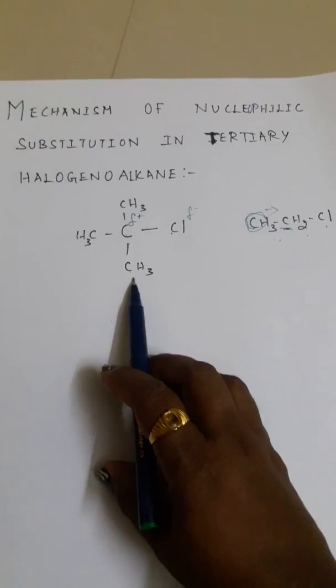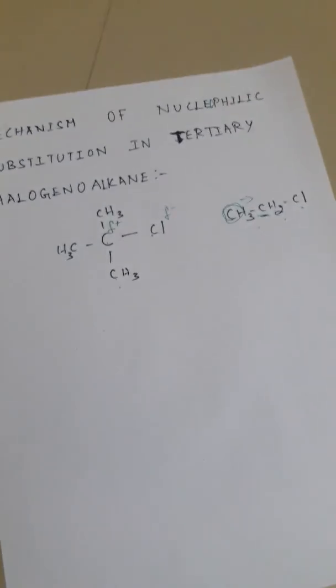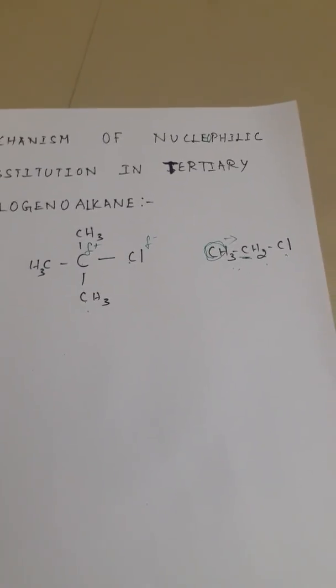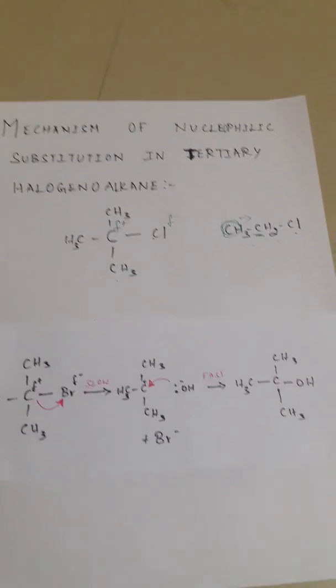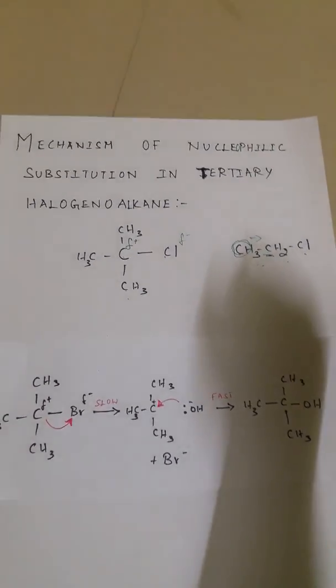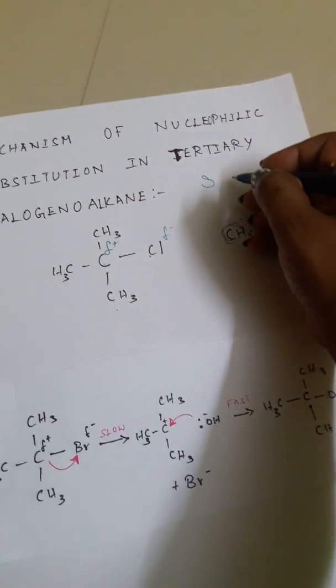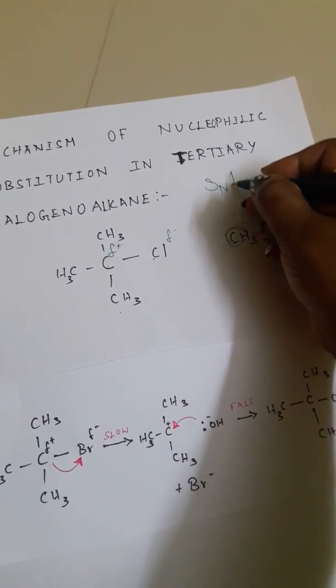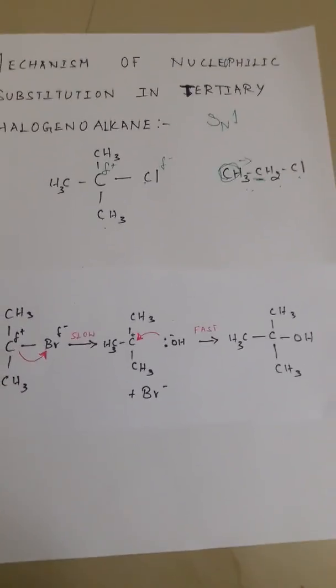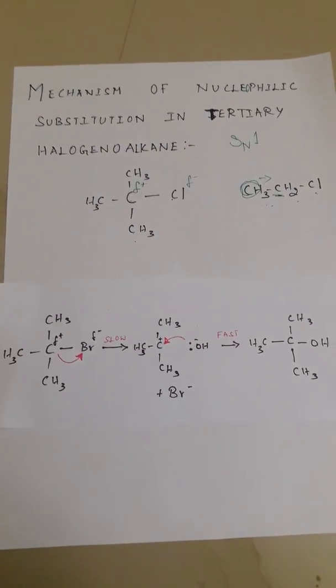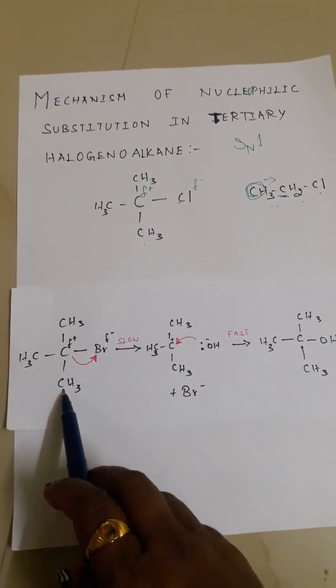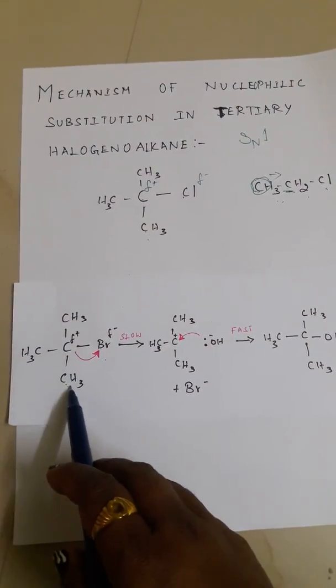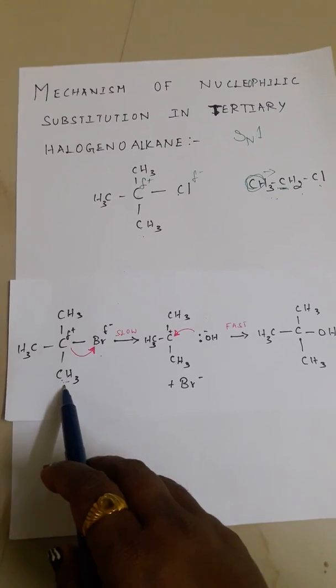It gets more electrons, which is why it is very difficult to remove any halogen group from tertiary haloalkanes. That is the SN1 mechanism—nucleophilic substitution one.